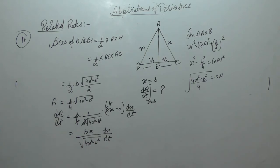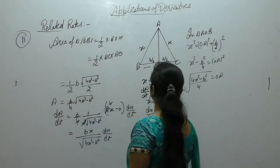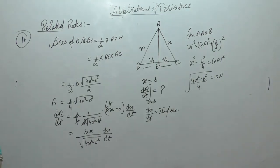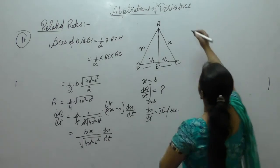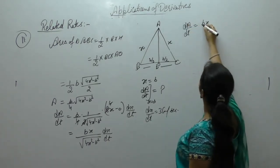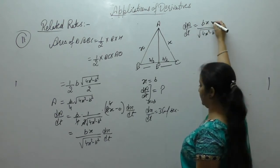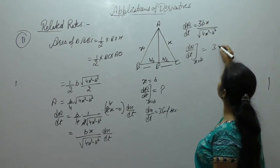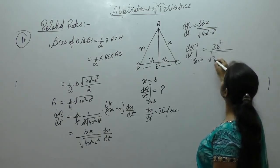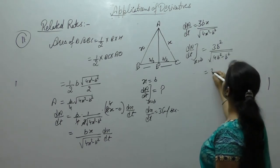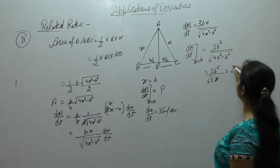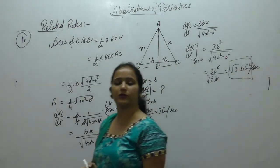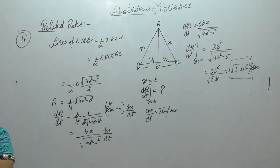Now differentiate with respect to time: dA upon dt equals b by 4 times 1 upon 2 square root of 4x squared minus b squared times 8x times dx upon dt. So dA upon dt equals bx dx upon dt upon square root of 4x squared minus b squared. dx by dt is 3 cm per second, so 3bx upon square root of 4x squared minus b squared. When x equals b: 3b squared upon square root of 3b squared equals root 3 b cm square per second.